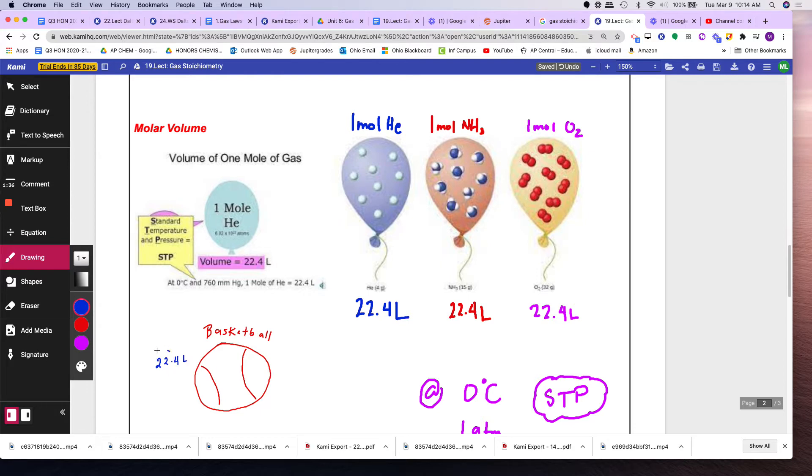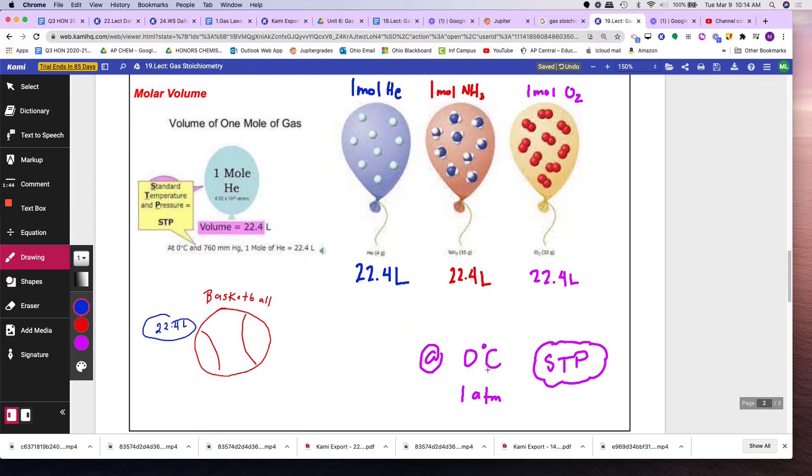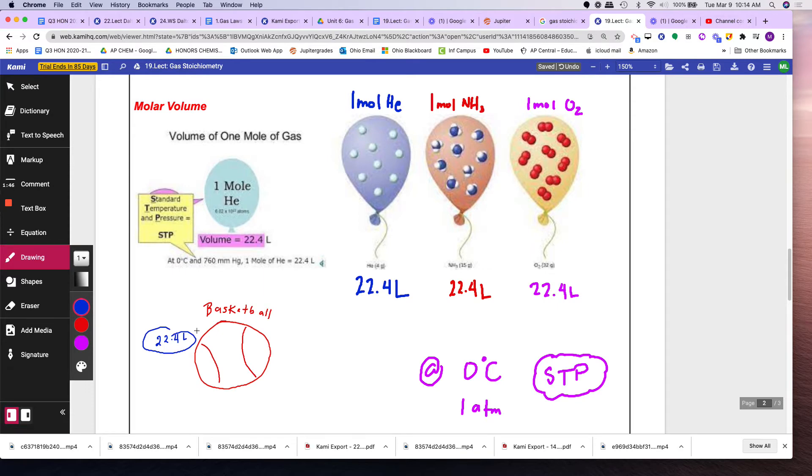So let me tell you about this number. Remember, if you have a mole of helium, and you're at 0 degrees Celsius, 1 atm, STP, it'll occupy this much volume. Think of a basketball. Your balloon will be about as big as a basketball if you had a mole of helium.